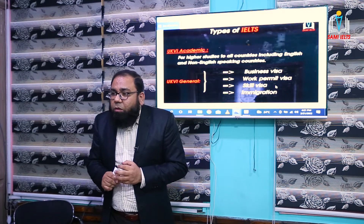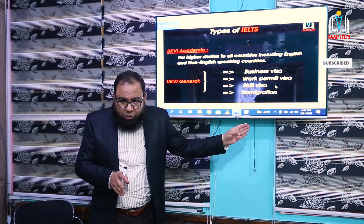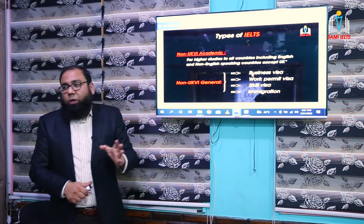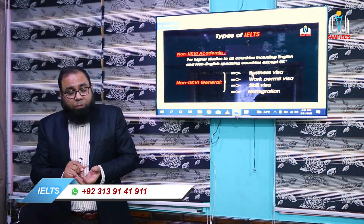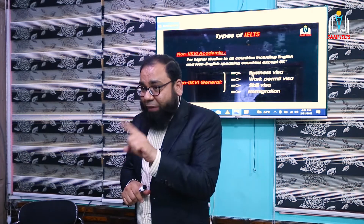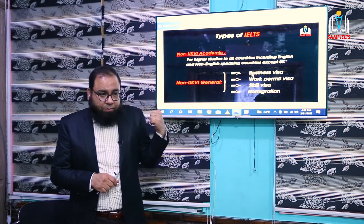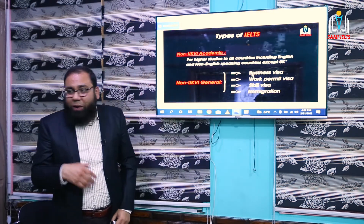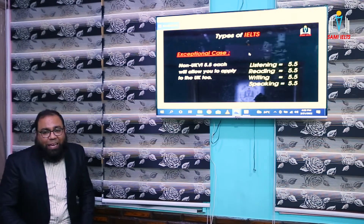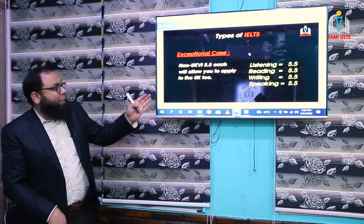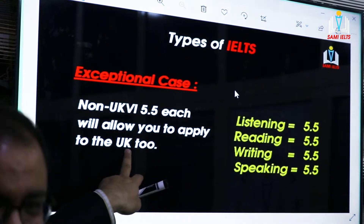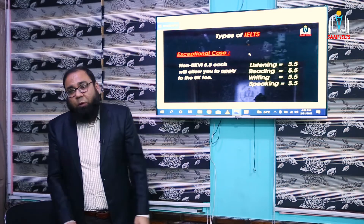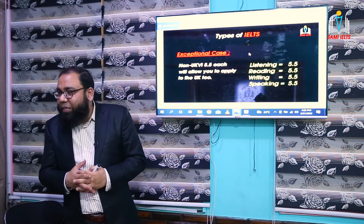For non-UKVI, the same story applies: non-UKVI Academic is for study visa to Australia, Canada, and other countries. If you get 5.5 in each section, you can also go to the UK on non-UKVI Academic. Non-UKVI General is for business visa, work permit, skill visa, or immigration visa. The exceptional case remains: 5.5 in each section on non-UKVI allows you to apply to UK universities or colleges as well.